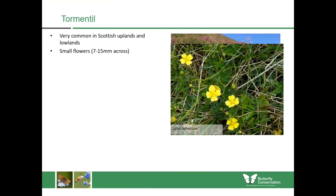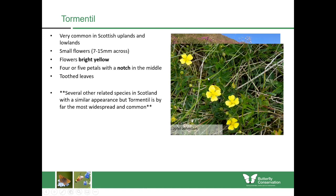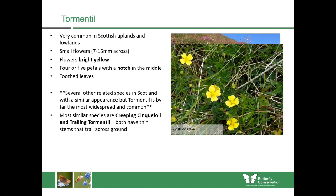Tormentil is a very common plant in Scottish uplands and lowlands. It has very small flowers only up to 15 millimetres across — a bright pale yellow, with four or five petals with a notch in the middle, which helps identify it from other species. It also has toothed leaves. Similar species include creeping cinquefoil and trailing tormentil, but both have thin stems trailing across the ground and aren't shrubby and leafy like regular tormentil, which is by far the most widespread. It's a useful nectar plant for various insects.